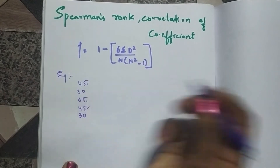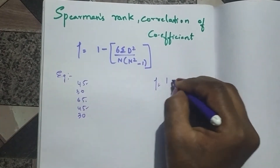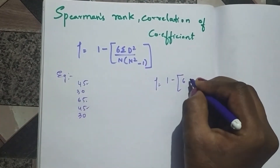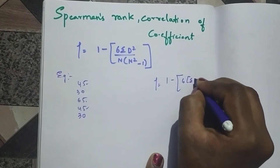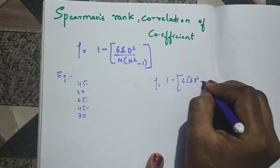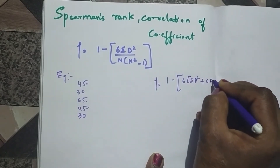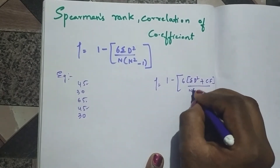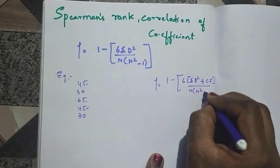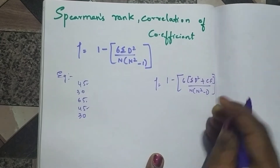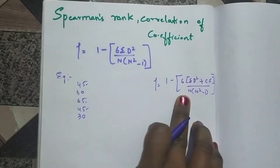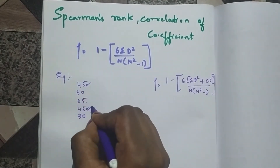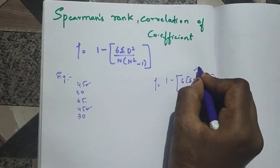So for this case where we have a tie, I need to use this formula: 1 minus 6 times (summation d² plus the correlation factor) divided by n times (n² minus 1). Whenever I get a tie in the ranking, I have to use this formula.